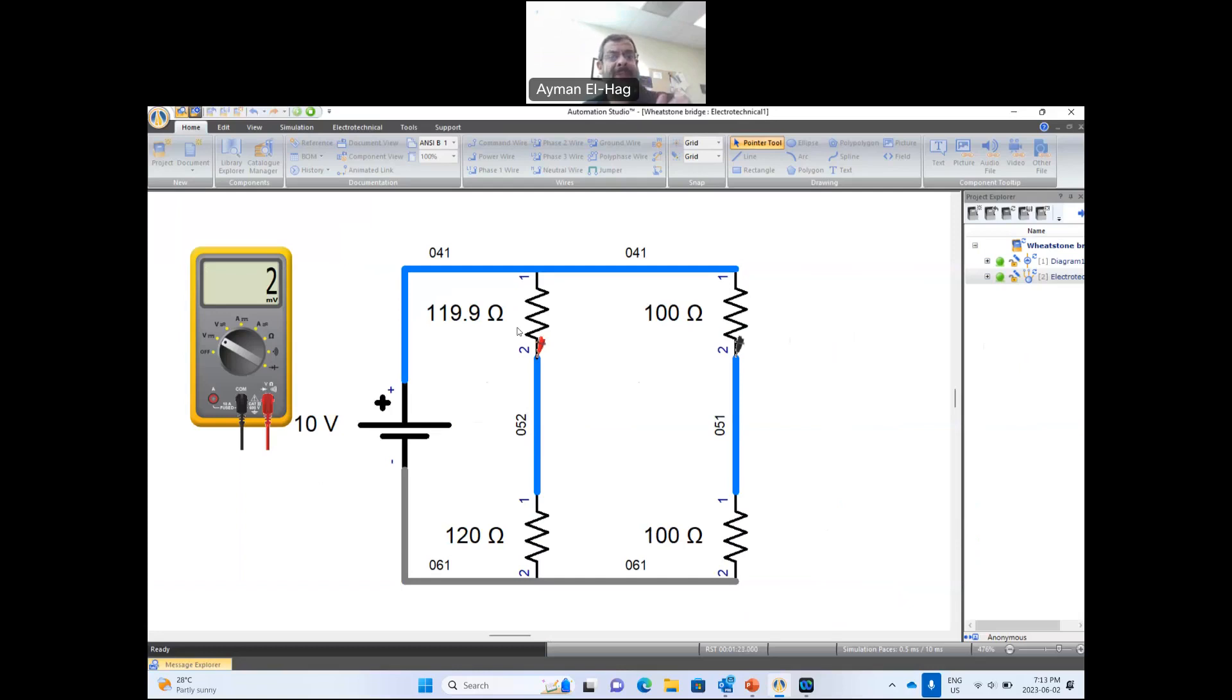So basically, the Wheatstone Bridge is used to convert the change of the resistance of the strain gauge into a change in the voltage. Why? Because it's much easier to measure a voltage in a circuit continuously using, for example, a data acquisition system than measuring the change in the resistance.